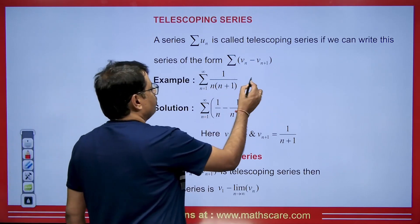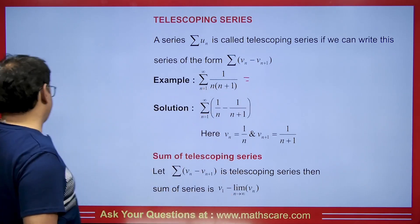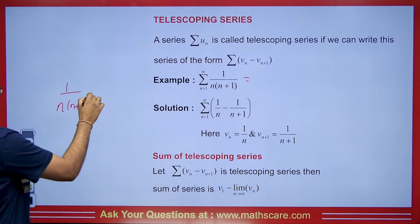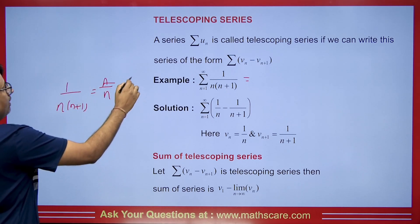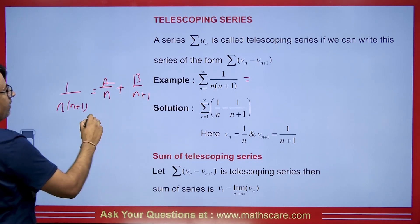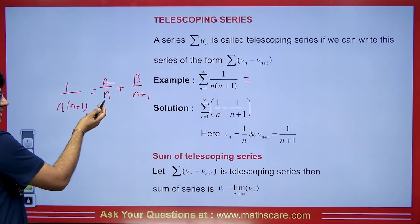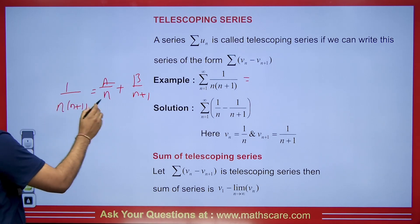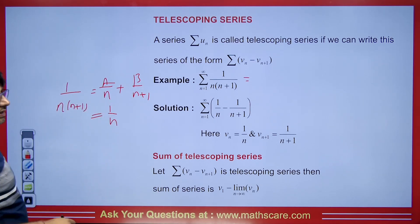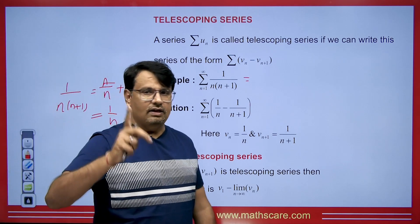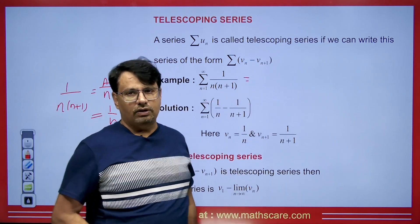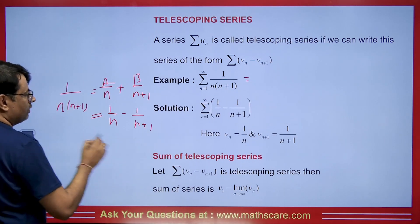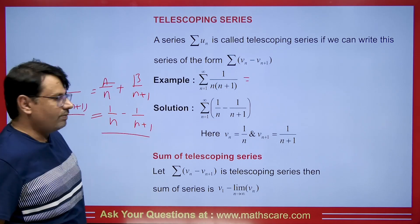For example, here we have uₙ = 1/(n·(n+1)). If we do the partial fraction of this, it will be a/n + b/(n+1). What value of n makes a equal to 0? We use 0, and substituting gives us a = 1. Putting n = −1 for the shortcut of partial fractions gives b = −1/(n+1). So the partial fraction is 1/n − 1/(n+1).